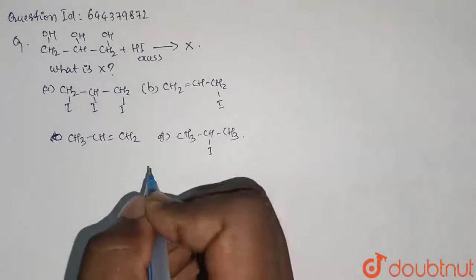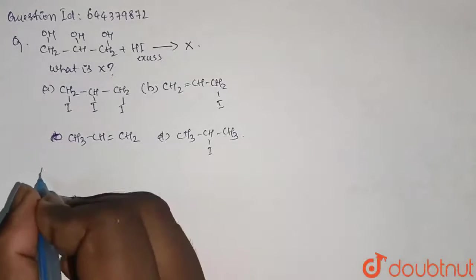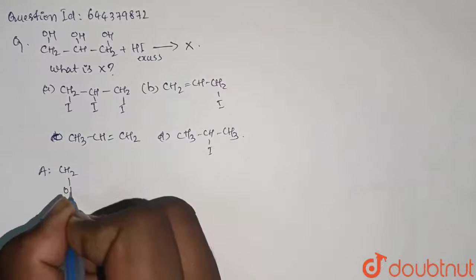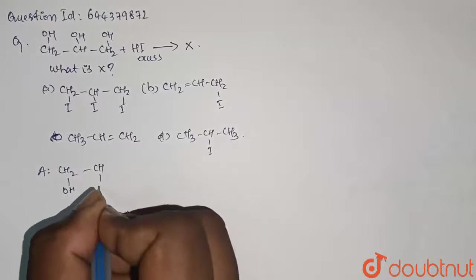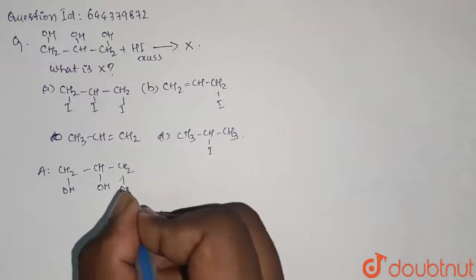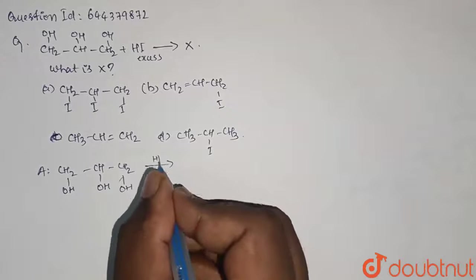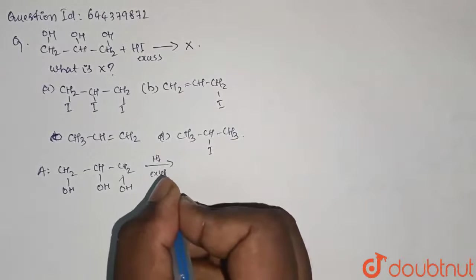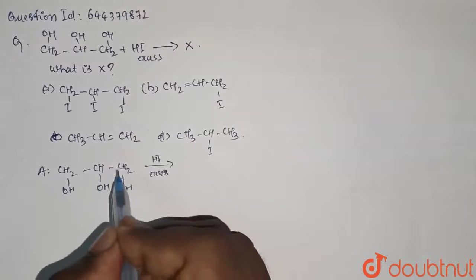Let us see how we can solve this. So it is CH2OH-CH2-CH2OH reacting with excess HI. Here, what is going to happen is all the OH groups will react.